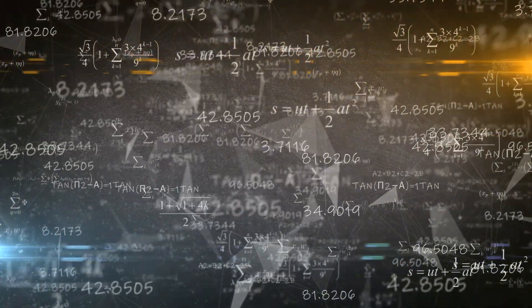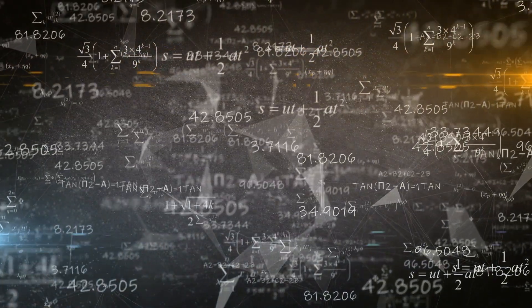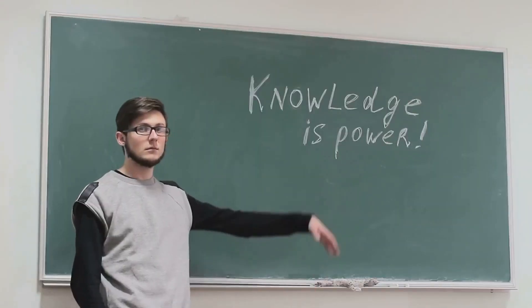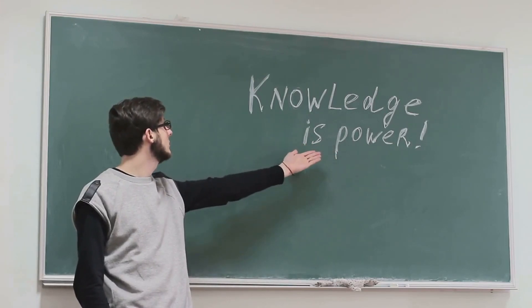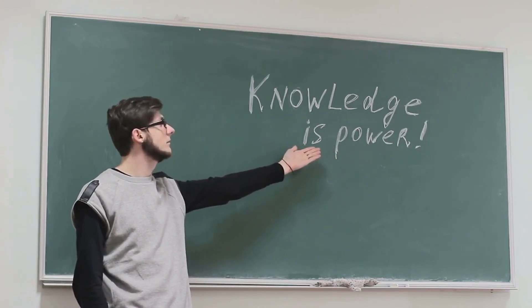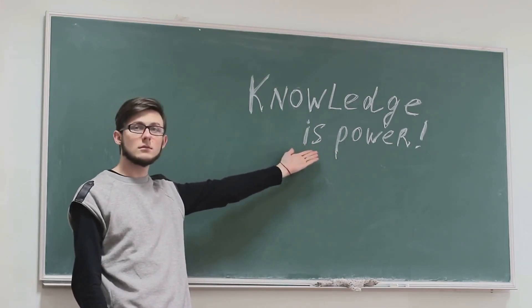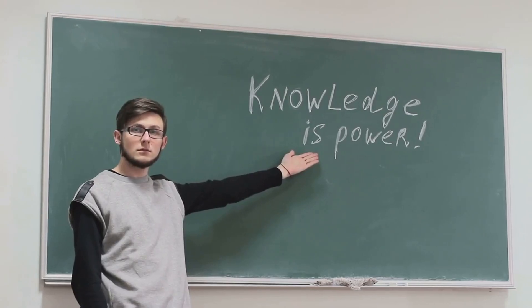Afterward, we square the differences from the mean of the independent variable. It's like squaring the distances of the marbles from the balance point, which helps us understand the spread of our data.